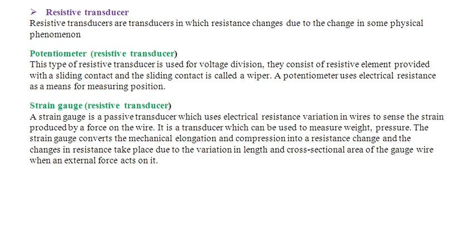For your knowledge, resistive transducers are of three main types: potentiometer, strain gauge, and thermistor, among others. We will study these three types of resistive transducers in detail in later parts of this chapter.